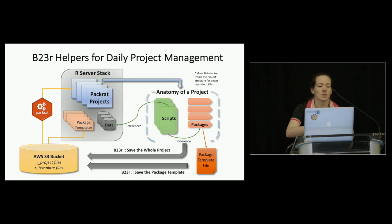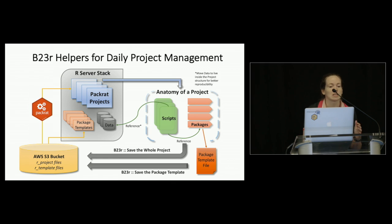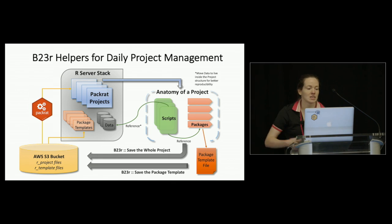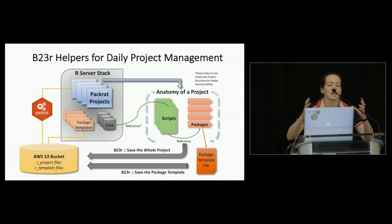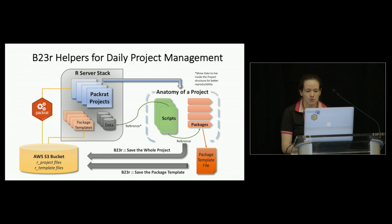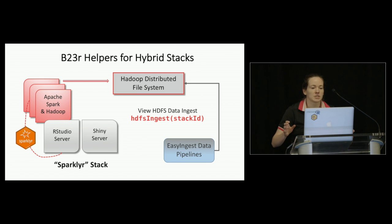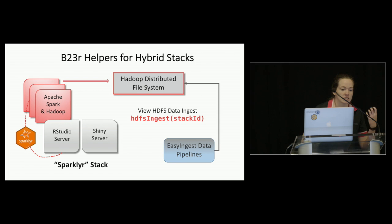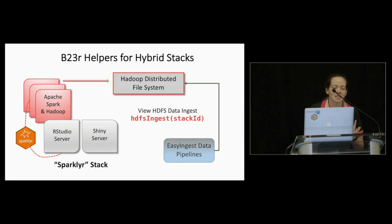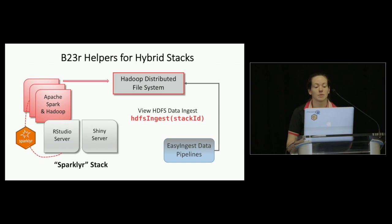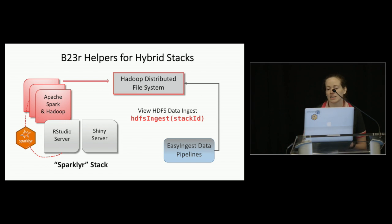I also have another solution that was a time saver for me personally — as I was creating new projects, I was spending a lot of time installing those same packages over and over again. So I decided you could do something similar by saving out a package template file into S3 and then using it to initialize brand new projects. That's been saving me a lot of time. Finally, we have some helpers for our hybrid stacks. We've created a SparklyR stack, which is RStudio server running on Spark, and we have our easy ingest data pipeline going into HDFS instead of RStudio server. We needed a function so we could stay in RStudio server and still see inside HDFS.